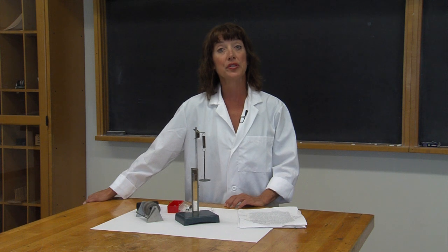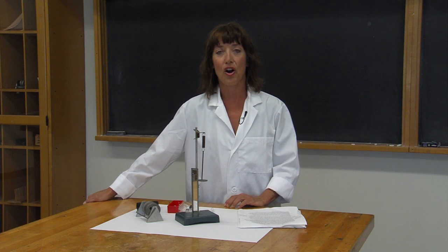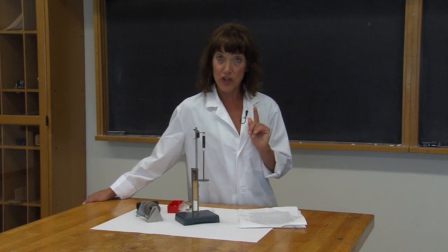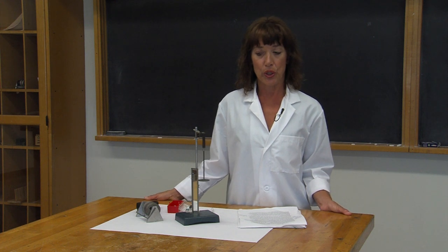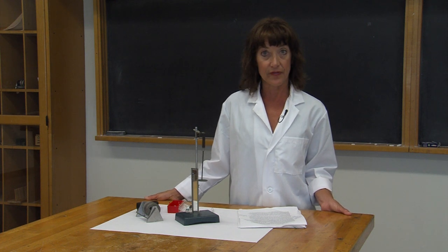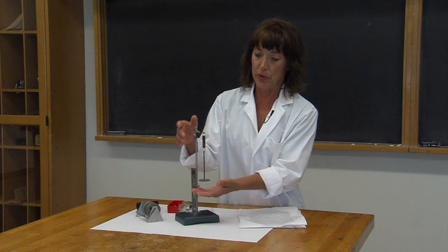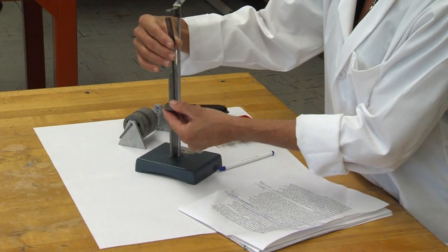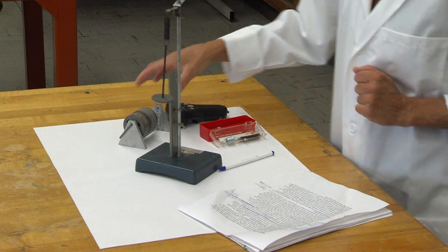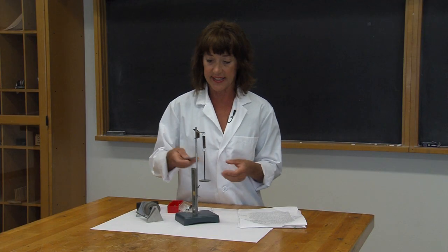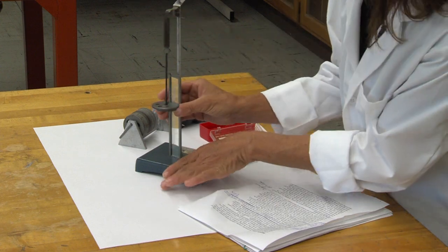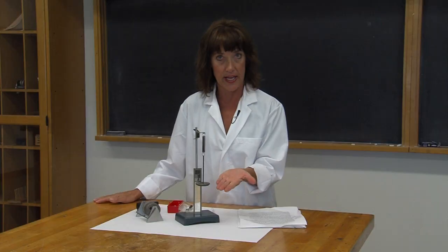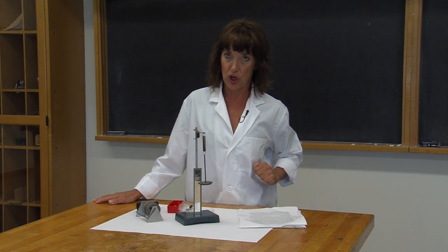We'll calculate this value using two methods and compare our results. For the first method, we will add hanging masses to displace our spring. This is very easily accomplished. To do so, we'll simply attach a hanger to the end of the spring like this and add these slotted masses in 50 gram increments. Each time we add a mass, we will record the amount of displacement that occurs.